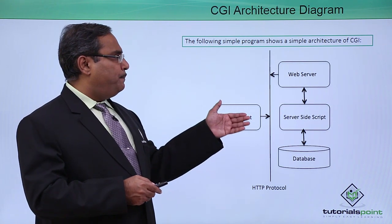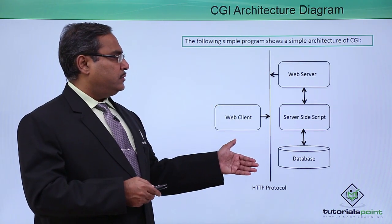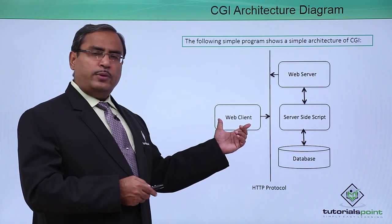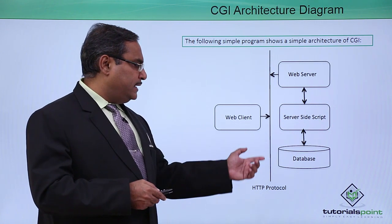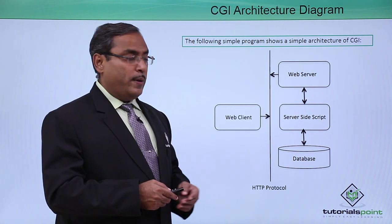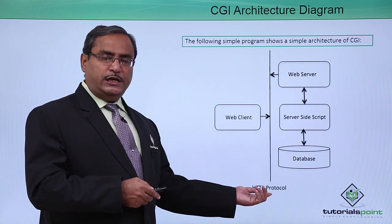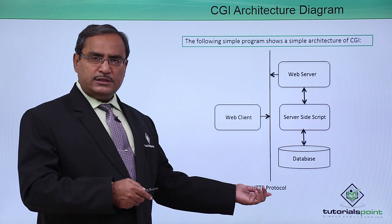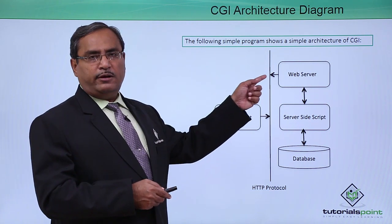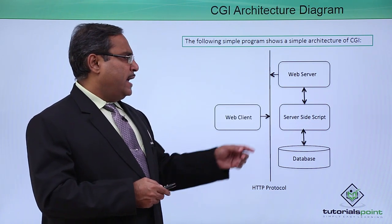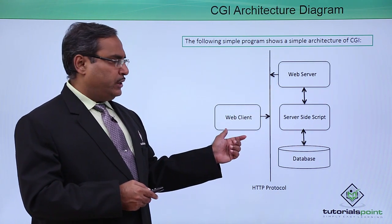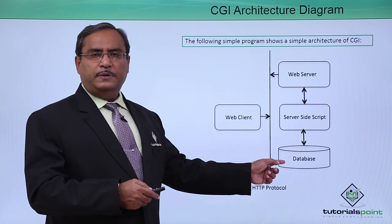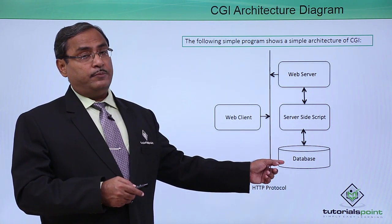Here is a simple structure — the architecture of CGI we are going to discuss. Here we have the web client, which is interfacing with the web server via the HTTP protocol. Protocol means a collection of rules and regulations with the help of which the web client interacts with the web server. The web server, in the meantime, to process the request, will be accessing the server-side script and the respective databases if there is any requirement.